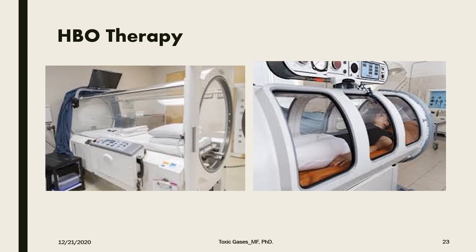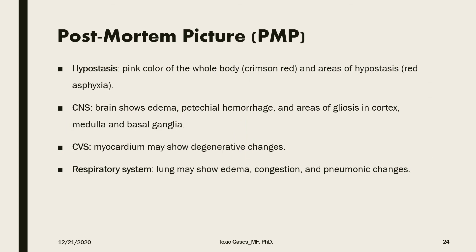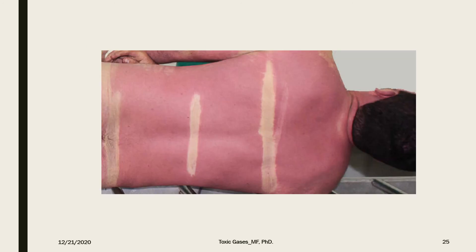This picture shows the hyperbaric oxygen chambers where patients receive hyperbaric oxygen. Speaking about the post-mortem picture of carbon monoxide: one of the characteristic features is hypostasis — it will become bright pink or crimson red in color. Hypostasis is the stagnation of blood in the dependent areas of the cadaver. CNS manifestations will show brain edema, petechial hemorrhages, and areas of fibrosis in the cortex, medulla, and the basal ganglia. The cardiovascular manifestations will show degenerative changes in the heart, and the respiratory system will show manifestations of edema, congestion, and pneumonic changes. Here is a picture of the crimson red color of hypostasis in a cadaver with carbon monoxide poisoning after death.